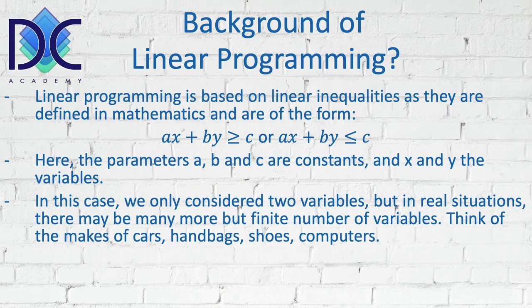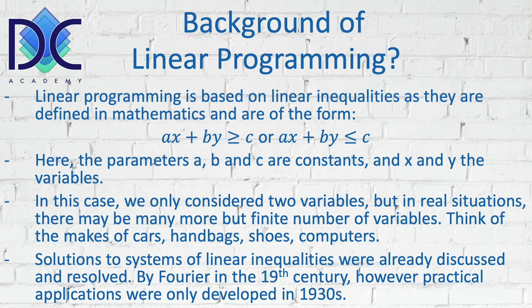In real situations, there may be more than two variables. It can be a finite number of variables. For example, when we look at the mix of cars, handbags, shoes, computers, tasks in a factory, or parts that you are using — basically, the number of variables can be very large, but always finite.